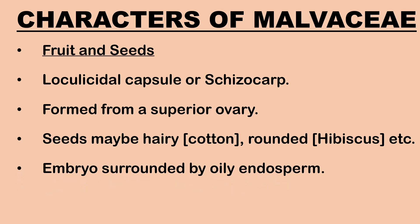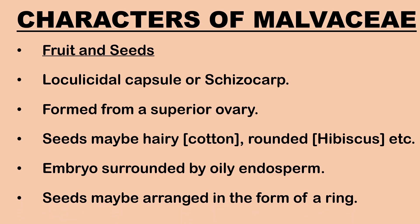The embryo may be straight or curved. In certain species, at the bottom of the style, there are many disc-shaped seeds arranged in the form of a ring and are covered by the calyx. In some other species, there may be only five rounded seeds inside the calyx.